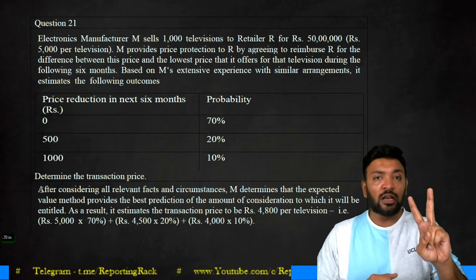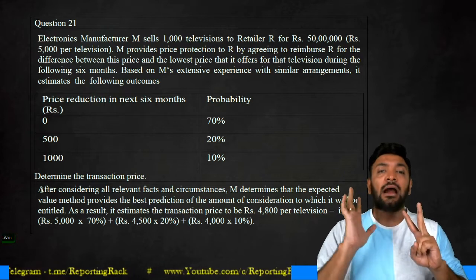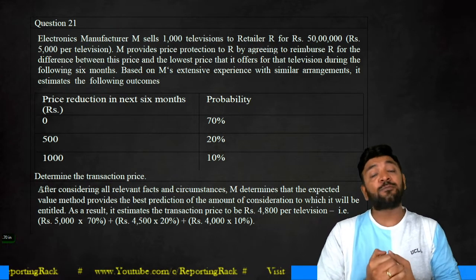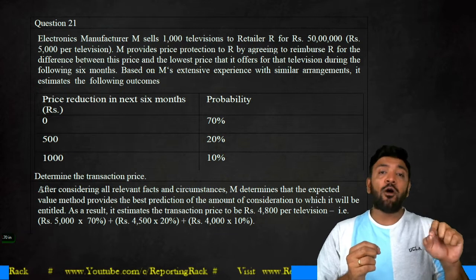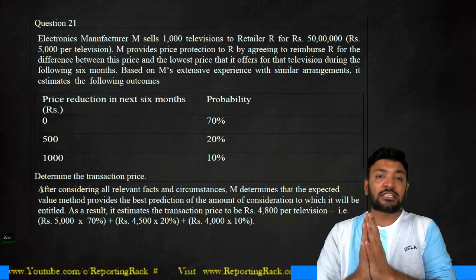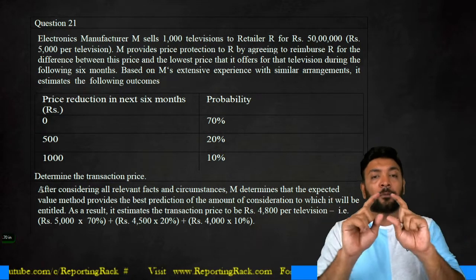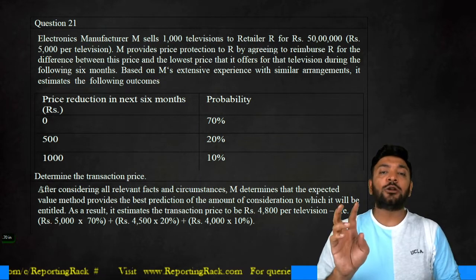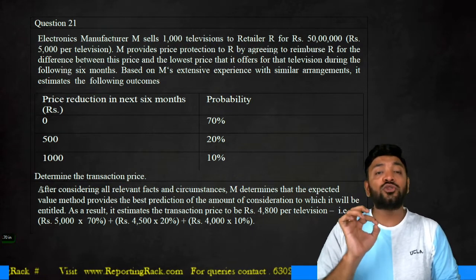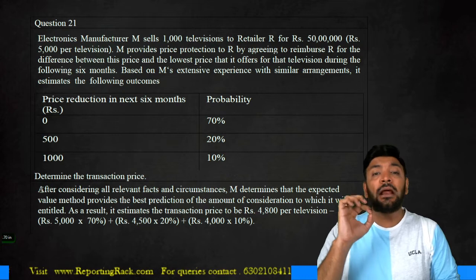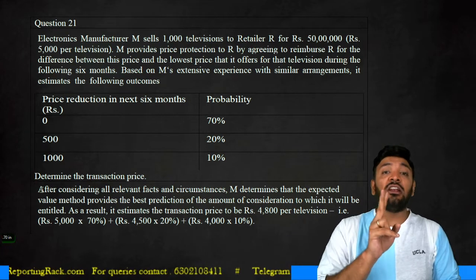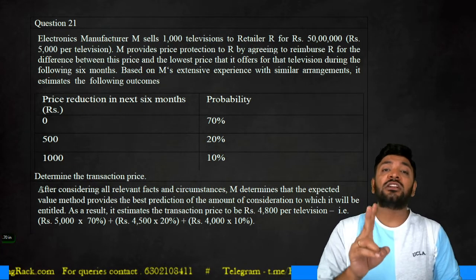If there are only two possible outcomes, then the most likely outcome will be identified. If there are more than two, then I'll have to go for something called expected value. Expected value is the sum of probability multiplied by outcome. Identify each outcome, identify its probability, multiply all the estimated outcomes by their probability and get the total — that is called expected value. This applies only when there are multiple outcomes and the number of outcomes is more than two. If there are only two, I will go for most likely amount, not expected value.